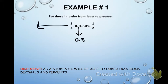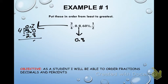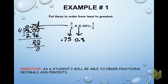To turn a fraction into a decimal, we divide: three divided by four. Four goes into three zero times, so we add a decimal and a zero. Four goes into 30 seven times; seven times four is 28, subtract and get 2. Add another zero — four goes into 20 five times; five times four is 20, subtract and get zero. So three-fourths equals 0.75.